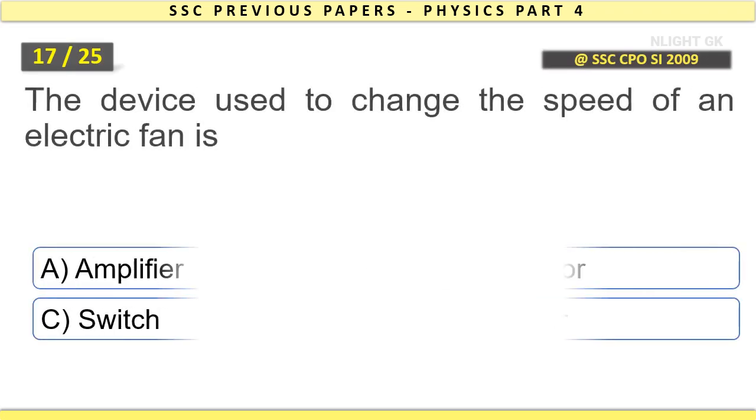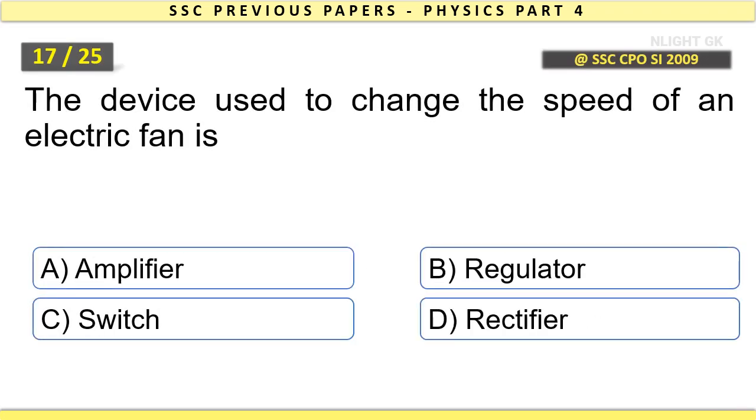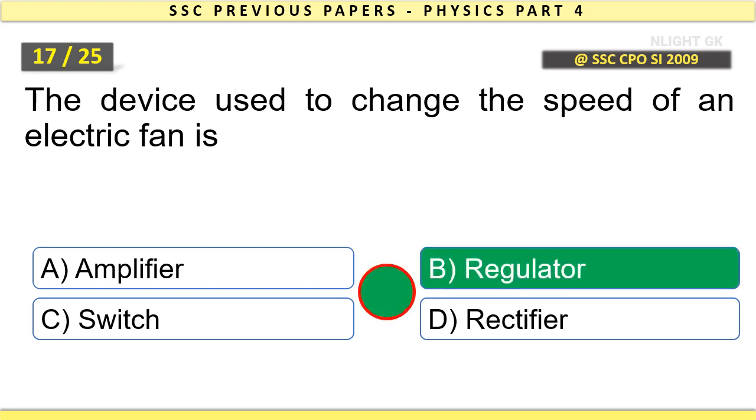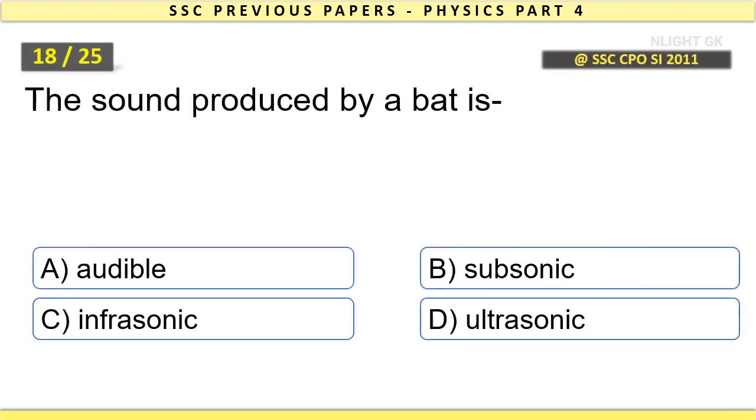The device used to change the speed of an electric fan is regulator. The sound produced by a bat is ultrasonic.